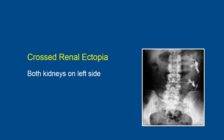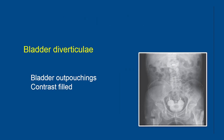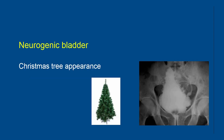Now some examples of findings in the urinary bladder. We may see a filling defect in the bladder, which can be due to bladder carcinoma — as seen in this case, there is an ill-defined irregular filling defect in the right lateral part of the bladder. Bladder diverticle may also be picked up on IVU, appearing as outpouchings of the bladder which are contrast-filled. One appearance of a neurogenic bladder is an elongated bladder with an irregular or trabeculated outline giving what is known as the Christmas tree appearance.